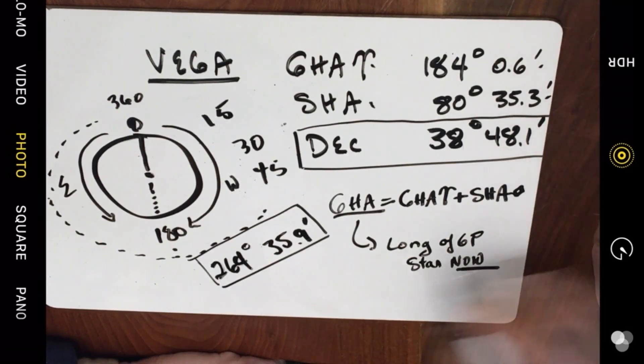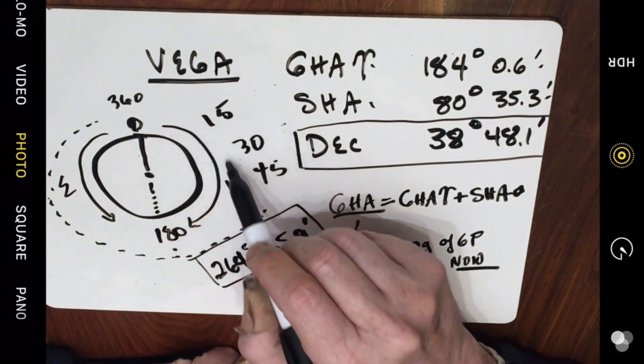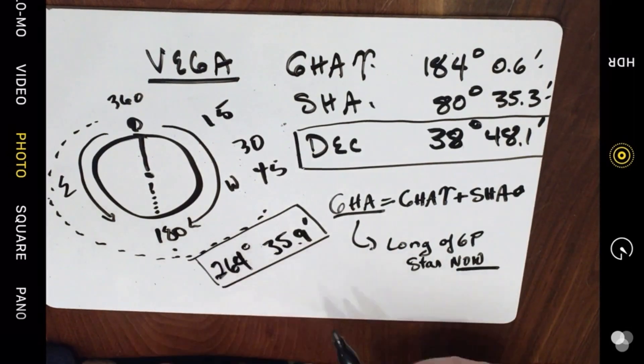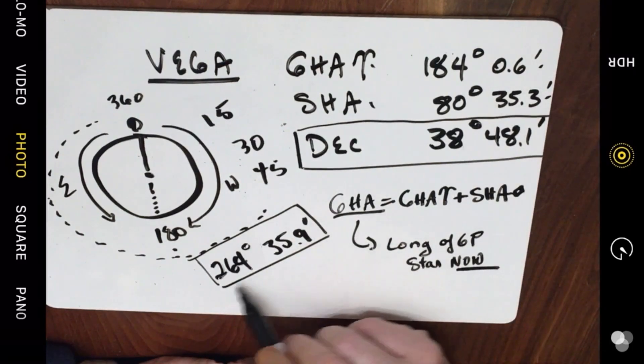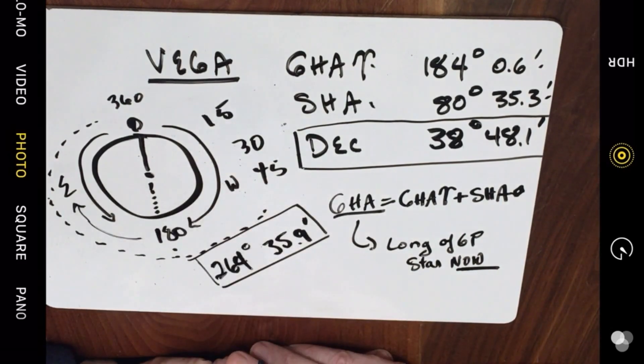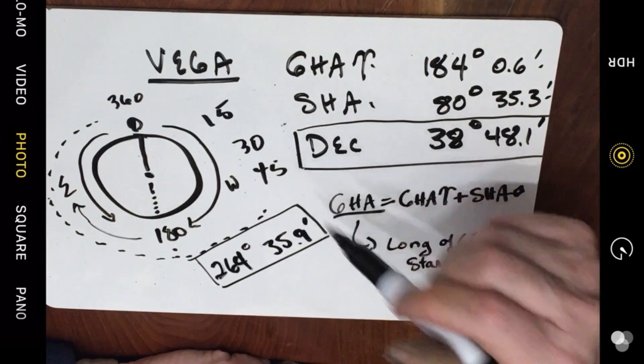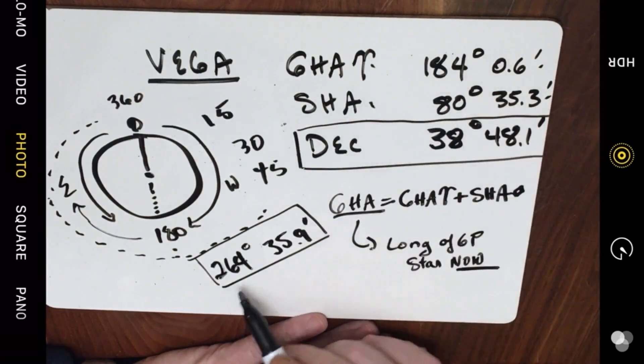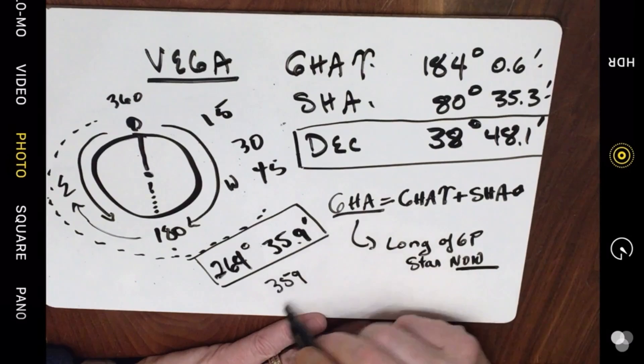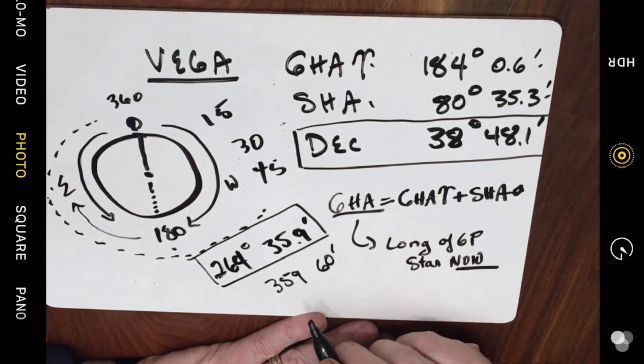So where would this longitude be? Obviously this is greater than 180 degrees. So as we've come around, we've gone through the entire western hemisphere. At 180 degrees we enter into the eastern hemisphere. Now yesterday what I talked about was taking 180 away from this and that would give us the amount of distance that we're in to the eastern hemisphere. There's actually a better way of doing this. I wanted to go through that to give you some clarity and now I'm going to teach you the shortcut that you need to know. If you take 264 degrees 35.9 minutes and subtract it from 359 degrees 60 minutes, you're going to get the longitude in the eastern hemisphere.